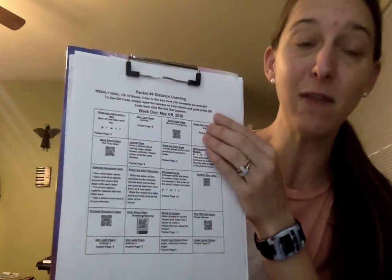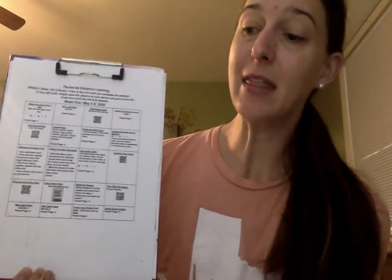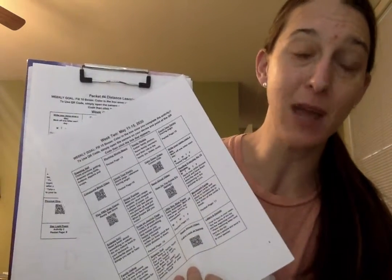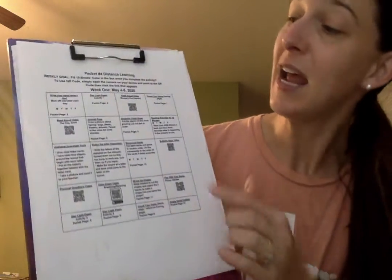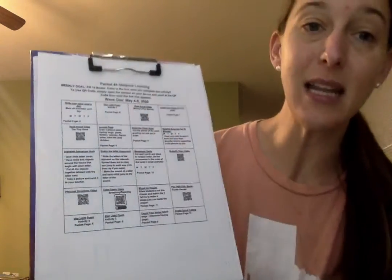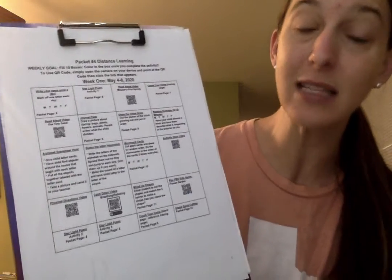So I'll show you how this works. There's one for the week of May 4th through 8th and then there's one for the week of May 11th through 15th. And so for the first week, you'll look at the first one and there's a little box and in each of the little boxes there's an activity.